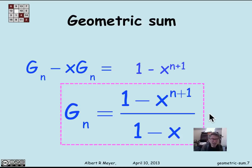That's a standard trick we'll see more of when we look at generating functions. It's a simple trick for getting a nice closed form for a sum. We refer to it as the perturbation method: you take the sum, perturb it a little, see how it relates to itself, get an arithmetic relation, and solve for a formula for the sum.